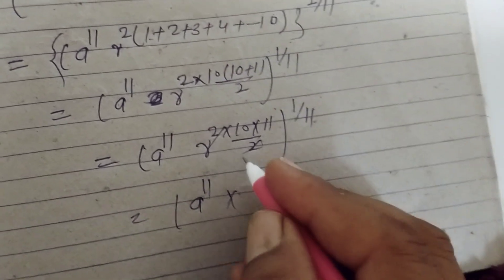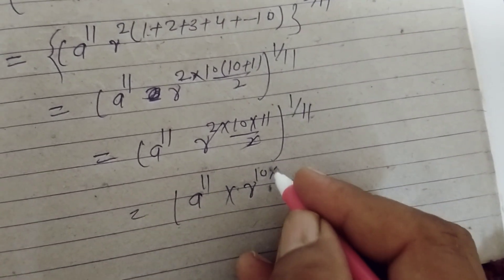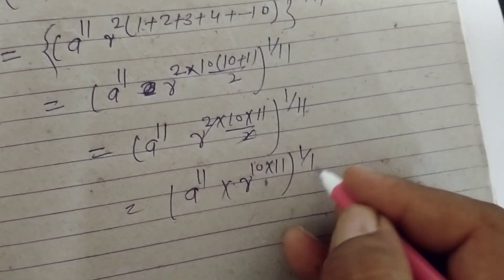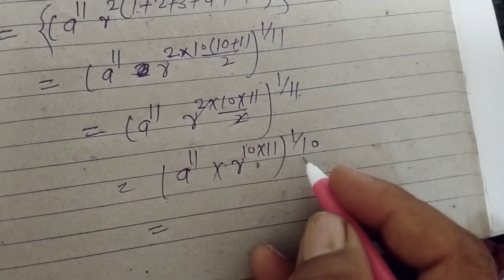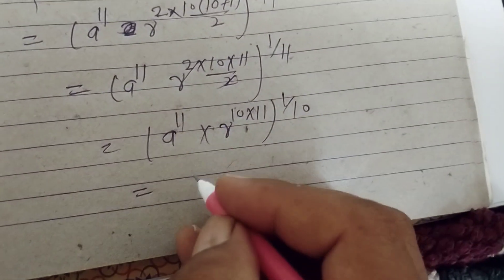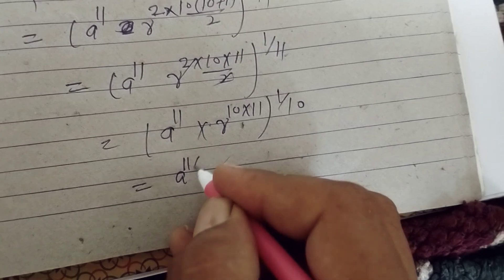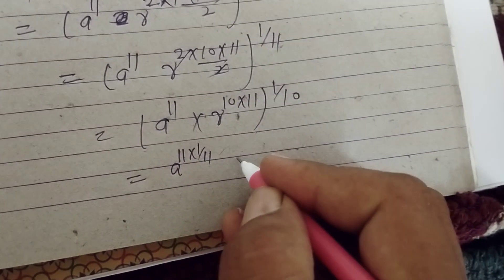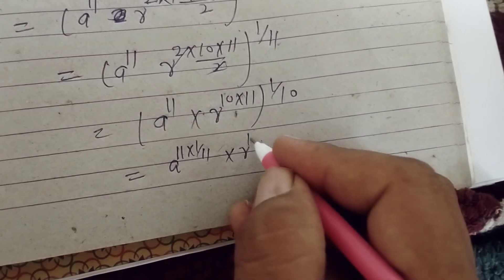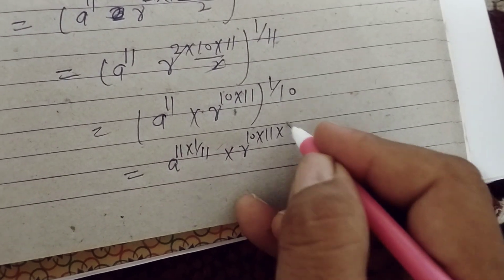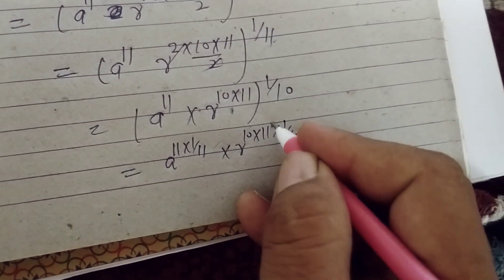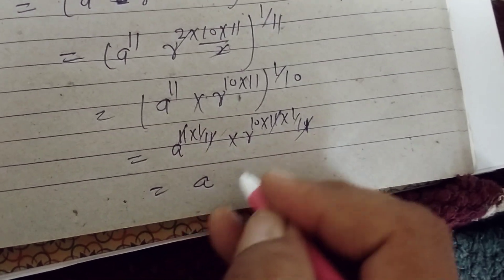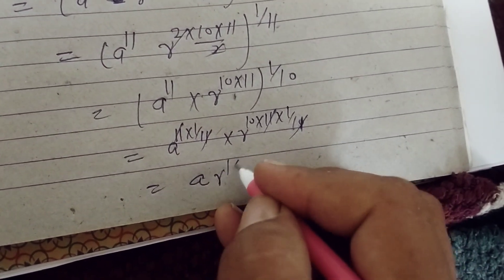Therefore, a to the power 11 times 1 by 10. Power on power, so we multiply the powers. 11 times 1 by 11, or 10 times 11 by 11, so this is ar to the power 10.